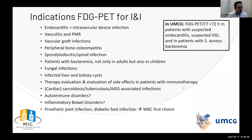Looking at indications for FDG-PET for infection and inflammation, there is a complete list: endocarditis, vasculitis, vascular graft infections, bacteremia, and more. Our center's policy is to perform an FDG-PET-CT within 72 hours in patients with suspected endocarditis, suspected vascular graft infections, and bacteremia. As a result, we perform almost 7 to 10 PET scans for infection imaging every day — out of a total of 35–40 scans per day — which is a lot.